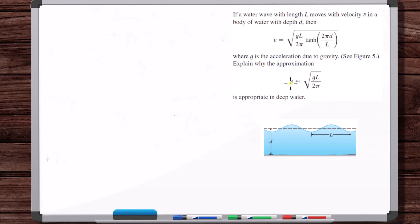Explain why this approximation is appropriate in deep water. So why in deep water can you approximate the velocity of an ocean wave to be this?